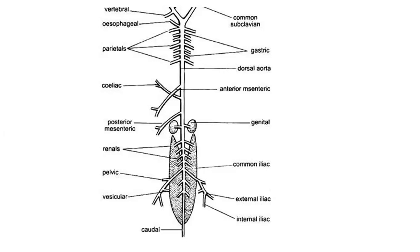This concludes the arterial system of Calotes. In the next lecture, we will see the venous system of Calotes.